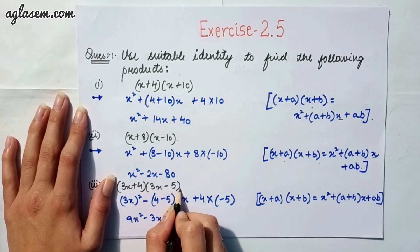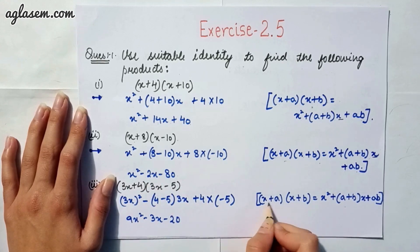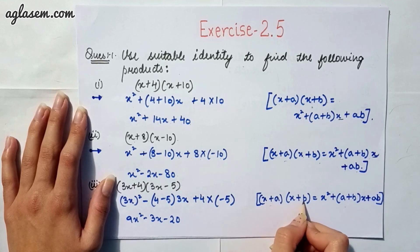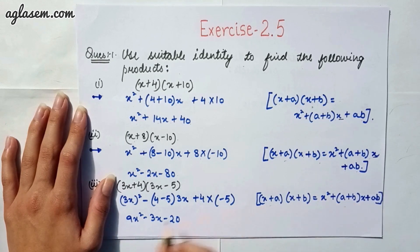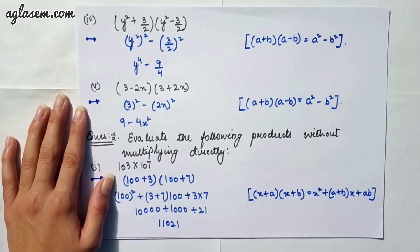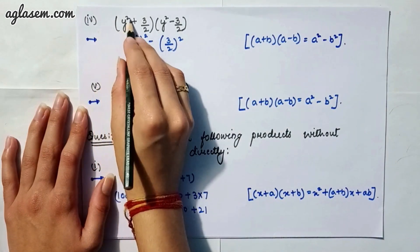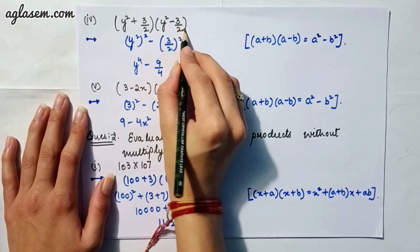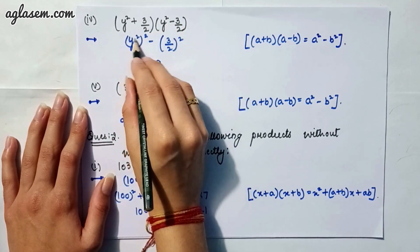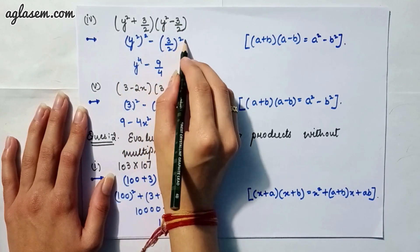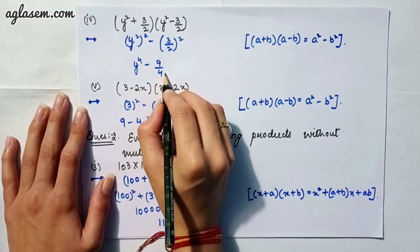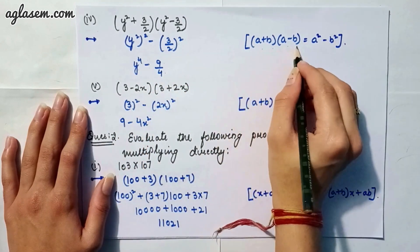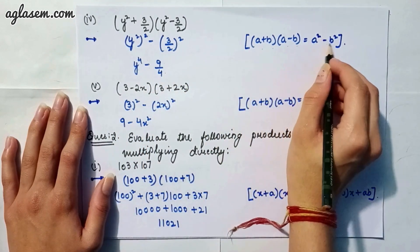Moving to our third part: (3x + 4)(3x − 5). Applying the same identity (x + a)(x + b) = x² + (a + b)x + ab, the answer is 9x² − 3x − 20. Moving to our fourth part: (y² + 3/2)(y² − 3/2). Using the identity (a + b)(a − b) = a² − b², the answer is y⁴ − 9/4.